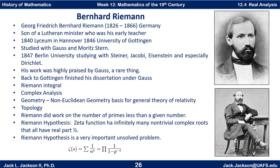Bernard Riemann lived from 1826 to 1866 in Germany. It strikes me how much these mathematicians accomplished in sometimes relatively short lifespans — Riemann only lived to be about 40 years old. He was the son of a Lutheran minister who was his early teacher. In 1840, he entered the Lyceum in Hanover; in 1846, the University of Göttingen, where he studied with Gauss and Moritz Stern. In 1847, he went to Berlin University, studying with Steiner, Jacobi, Eisenstein, and especially Dirichlet, whose relationship really helped him grow.